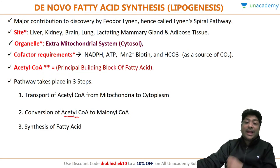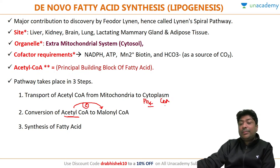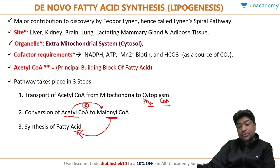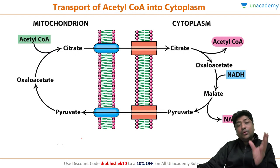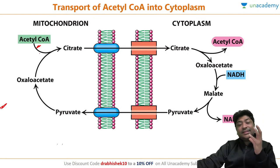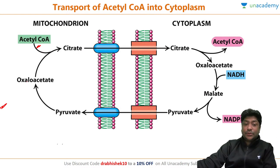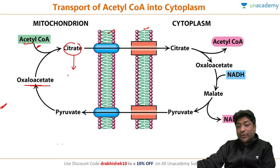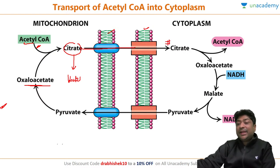Acetyl CoA derived from diet — through glucose → pyruvate → acetyl CoA via the link reaction — sits in the mitochondria. If the cell is in an energy-rich state, it will go toward fatty acid synthesis; if in an energy-poor state, it enters the Krebs cycle. Since fatty acid synthesis happens in the cytoplasm, this mitochondrial acetyl CoA must be transported out. We charge up organic molecules by adding carbon, phosphate, or CoA — here, a carbon is added, converting acetyl CoA into malonyl CoA.